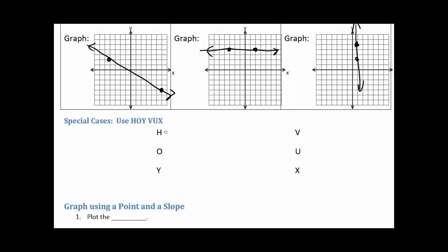But HOI-VUX helps us remember horizontal and vertical lines and how to find these slopes associated with that. So the H-O-I stands for horizontal. The O stands for zero slope and the Y stands for y equals. So if I look at all horizontal lines, I'll have that flat line, slope is zero, and it's going to be some y equals some sort of number, whenever I figure out what number that crosses the y-axis at.